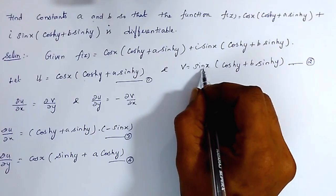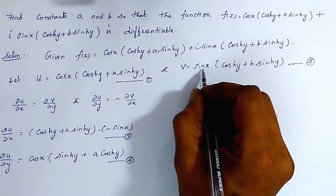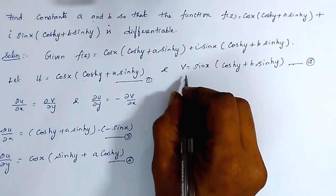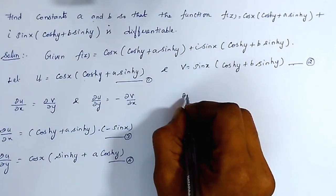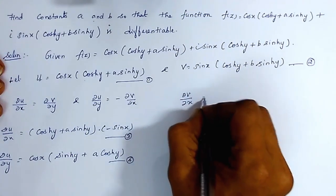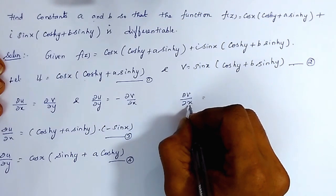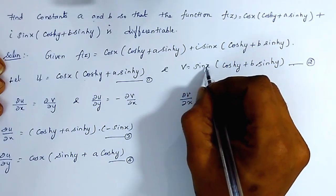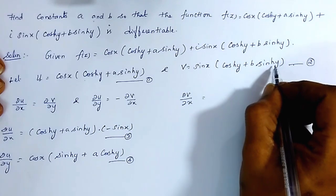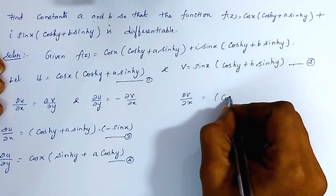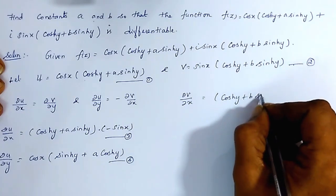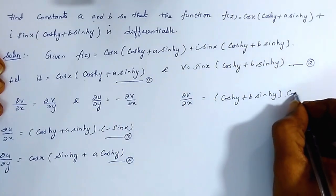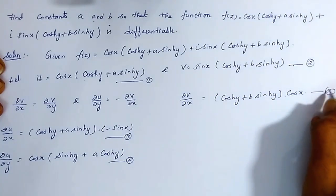Now differentiating equation 2 partially with respect to x, keeping y as constant: ∂v/∂x = (cosh(y) + b·sinh(y))·cos(x), since the derivative of sin(x) is cos(x). Let us assume this is equation number 5.